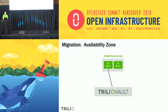Another use case is availability zone. Let's say you have AZ East and AZ West, and AZ East is starting to get a little saturated. You want to do some load balancing from a VM or workload perspective. You can pick and choose a couple of workloads to move from AZ East to AZ West and kind of load balance everything across.